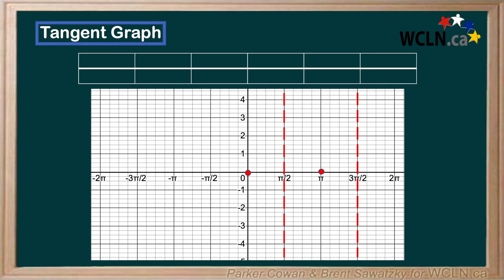Next, let's evaluate tangent in increments of pi over 8 to see how the graph behaves as we close in on those asymptotes. So, punching tan of pi over 8 into a calculator gives us 0.414. Let's plot that point.